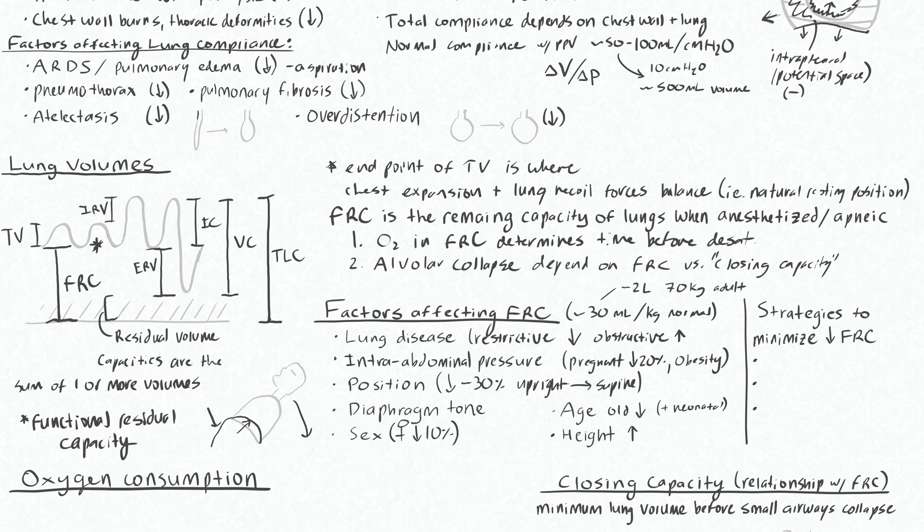So some strategies to minimize the decrease in FRC would be to tilt the bed up. So reverse Trendelenburg position. This will decrease the effect of positioning on our FRC. We can use CPAP while pre-oxygenating a patient, which can help keep some of the small airways open.